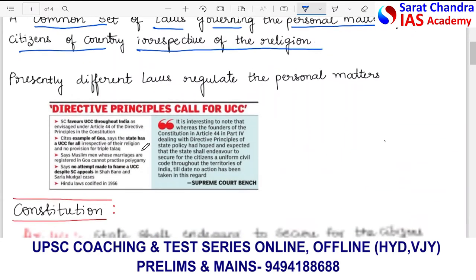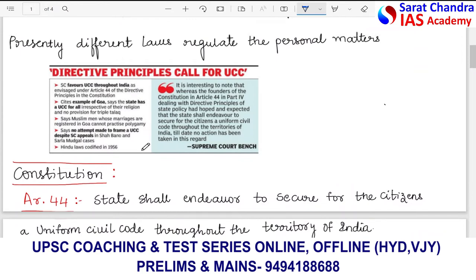The Supreme Court, in many judgments, has favored Uniform Civil Code throughout India, emphasizing Article 44 of the Directive Principles of the Constitution. Article 44, which falls under Directive Principles of State Policy and aims for the welfare of the state, says that the state shall endeavor to secure for citizens a Uniform Civil Code throughout the territory of India.